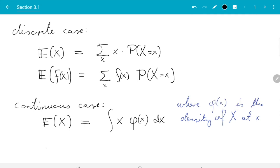So we have expectation of x is integral over all x times phi of x dx, where phi of x is the probability density function of random variable x at the point little x. And we can, of course, also consider a function of x.